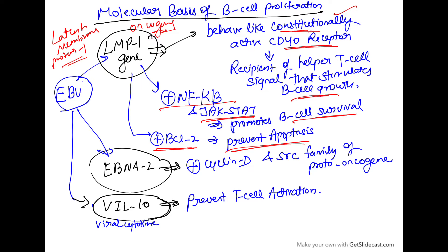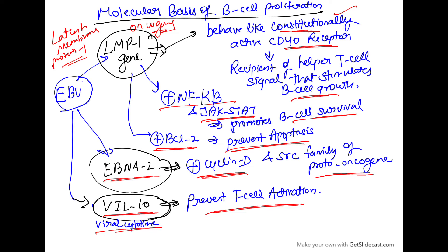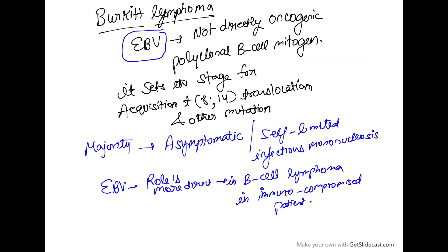EBV also contains another gene called EBNA2. EBNA2 stimulates cyclin D and the SRC family of proto-oncogenes. EBV also contains a viral cytokine VIL10, which prevents T cell activation. These are the three major genes and cytokines involved in B cell proliferation.